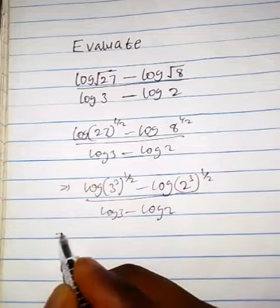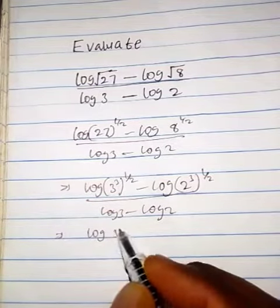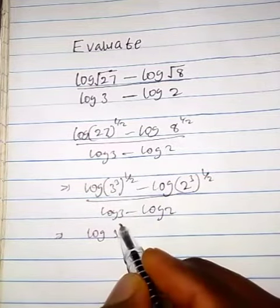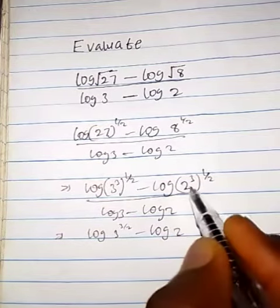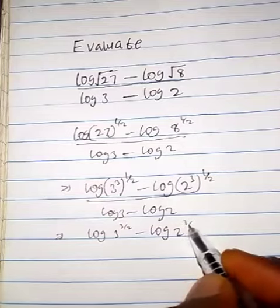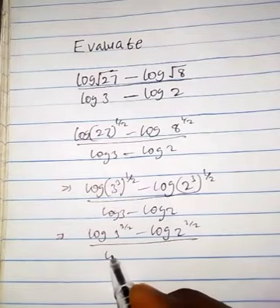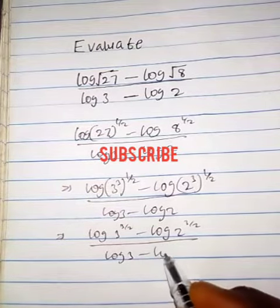So in this case we have log 3, 3 times half, we have 3 raised to the power 3. Minus log 2, 3 times half, we have 3 over 2, everything over log 3 minus log 2.